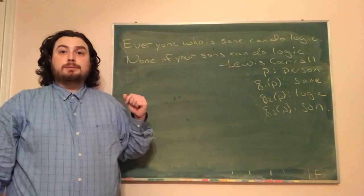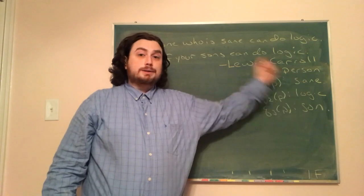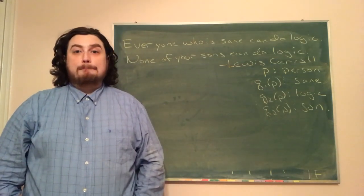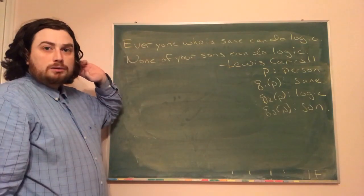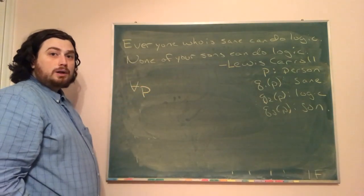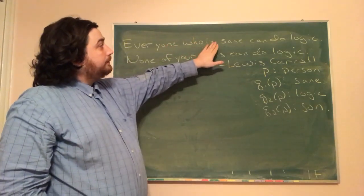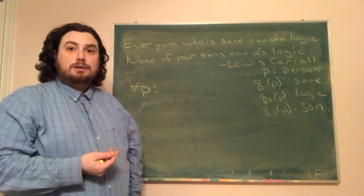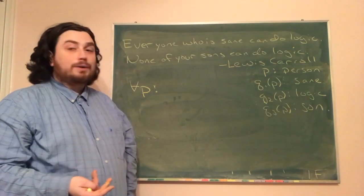I've made this a little smaller so we have more room on the board. Now, how do we connect these? We start off with 'everyone,' which means all people — so that's a 'for all persons.' We write that as ∀P, using the upside-down A for 'for all.' For all P, we have: well, if any person who is sane can do logic, that means if that person is sane, they can do logic. So we really have an if-then statement without the if-then written explicitly. I rewrote the sentence so it more closely resembled a logical statement.